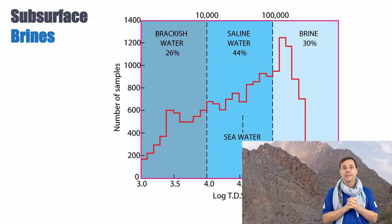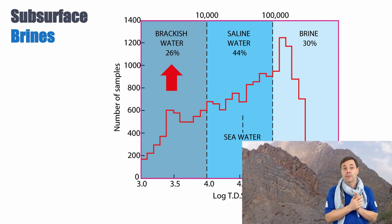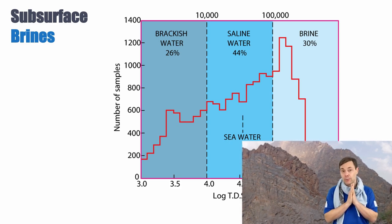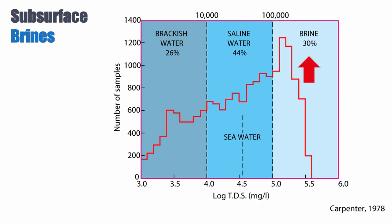So what type of diagenetic process can happen? Let's look at the composition of subsurface fluids. Most subsurface fluids are actually more saline than marine water. Brackish water represents only 26% of the reservoir. Saline water at or above sea level represents 44% of subsurface brines. And proper brines, with salinities well above seawater, represent a significant portion. In fact, more than 50% of subsurface fluids are very saline.